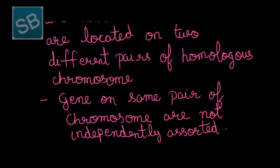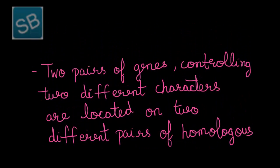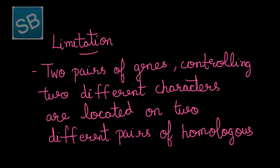This was the only limitation of this law. On this basis, Mendel proposed three laws: the law of dominance, the law of segregation obtained on the basis of monohybrid experiment, and the third law — the law of independent assortment — obtained on the basis of the dihybrid experiment.